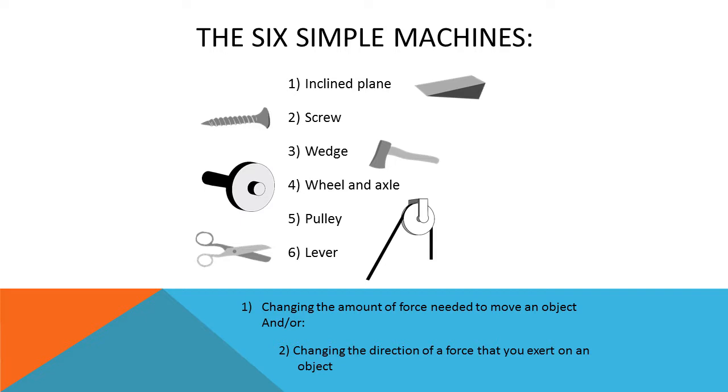These six simple machines are inclined plane, screw, wedge, wheel and axle, pulley, and lever.